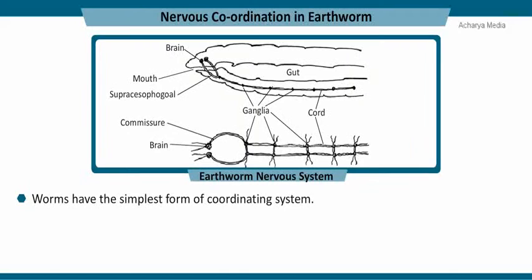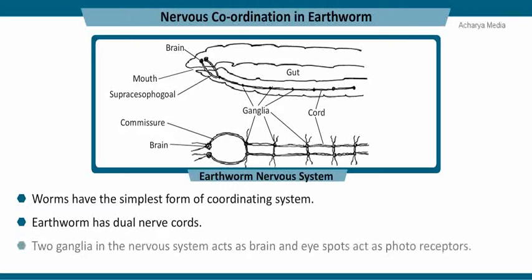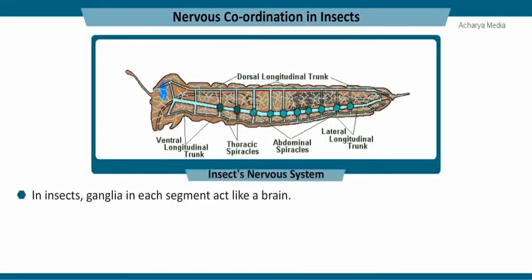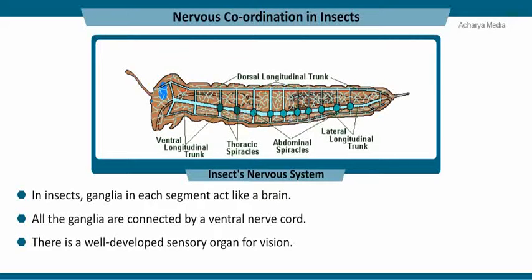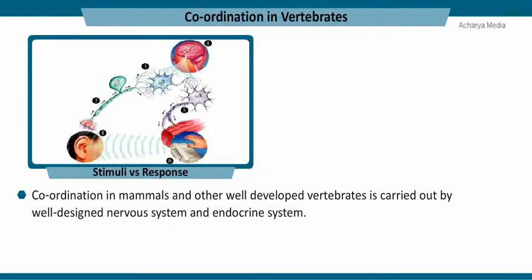Worms have the simplest form of coordinating system. Earthworms have dual nerve cords, and two ganglia in the nervous system act as a brain, while eye spots act as photoreceptors. In insects, ganglia in each segment act like a brain, and all the ganglia are connected by a ventral nerve cord. There is a well-developed sensory organ for vision, and the olfactory or sense of smell is carried out by a pair of antennae.